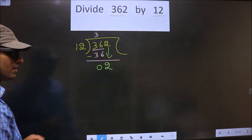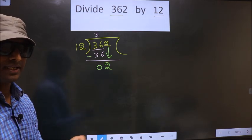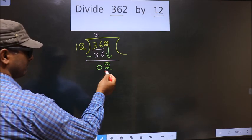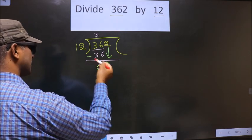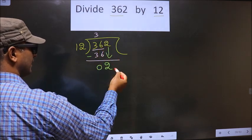Now here is where the mistake happens. See, here we have 2. 2 is smaller than 12, so what many do is they put a dot and take zero here, which is wrong.